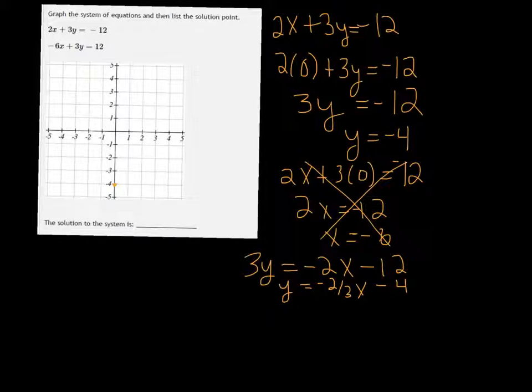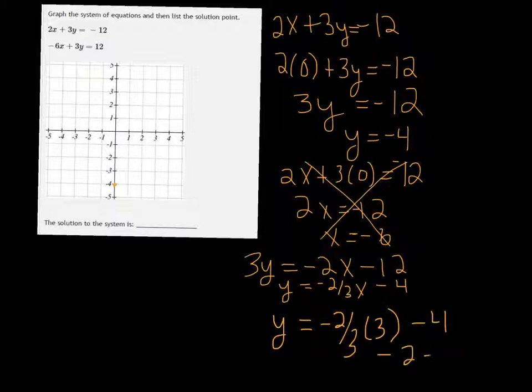So if I put in 3 for x, I get negative 2 thirds times 3 minus 4. And I end up with negative 2 minus 4, which is negative 6. Still not a point on our graph.